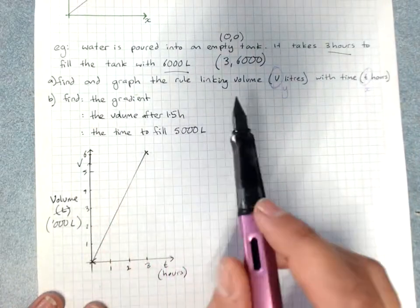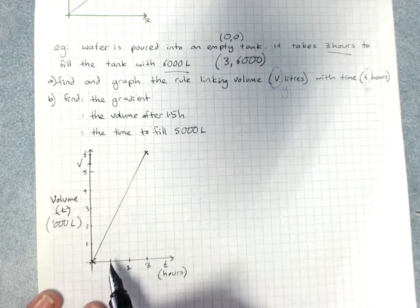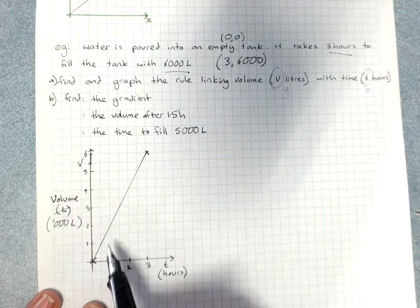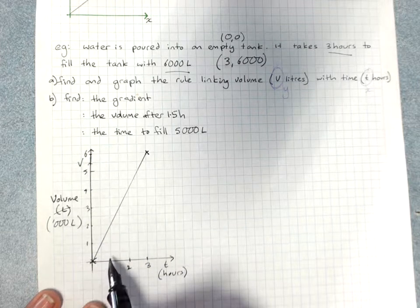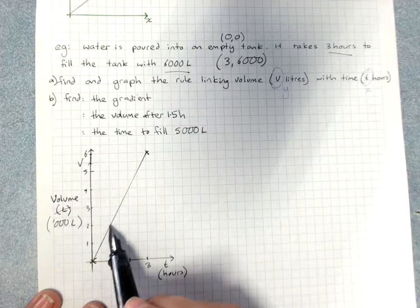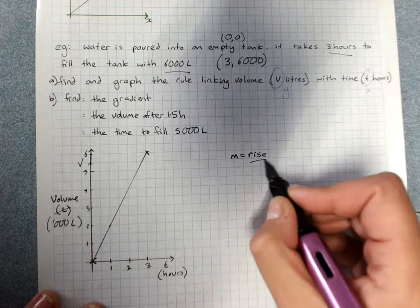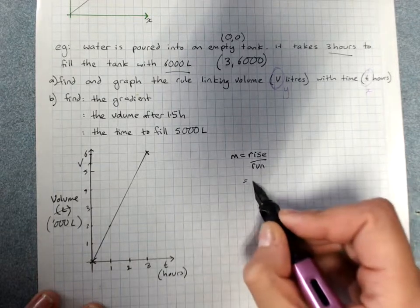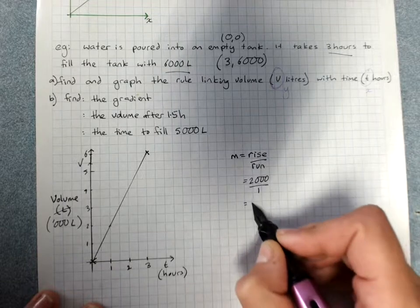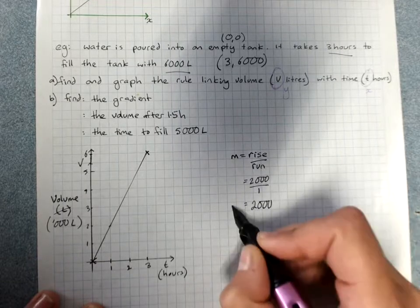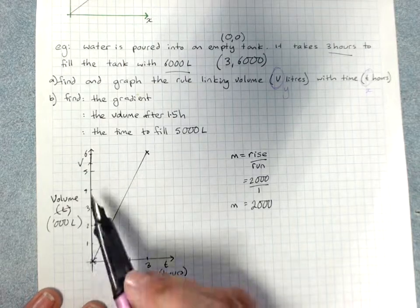Find the rule linking volume with time. Okay, as volume goes up 1... Sorry, as time goes up 1, volume has gone up by 2,000. So gradient is rise over run, which is 2,000 over 1, which is a gradient of 2,000. Do not be fooled into just doing 2, because it's 2 on your graph.